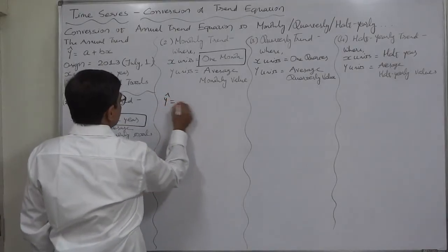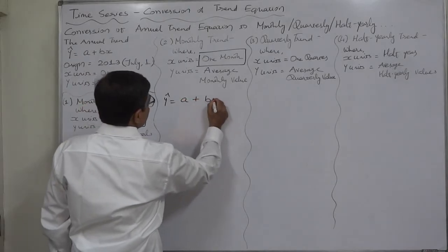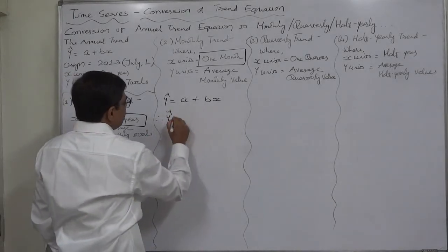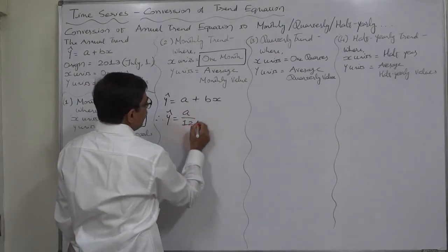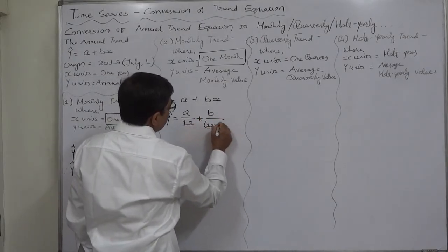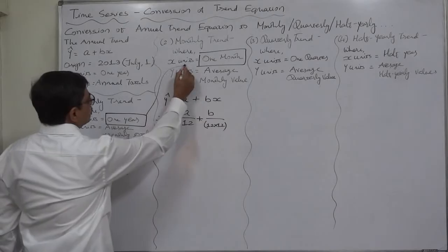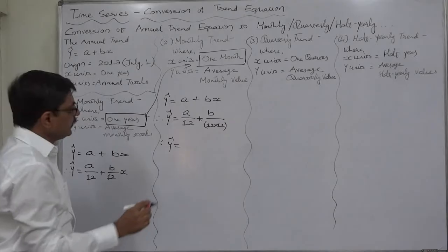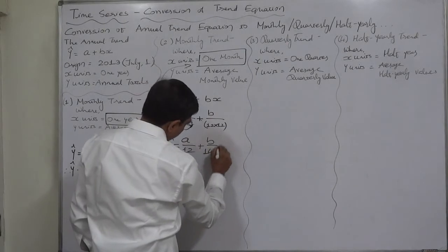Let's discuss what is going to happen. Annual trend is y equals to a plus bx. Now monthly where x unit is also one month will be a divided by 12 plus b divided by 12 into 12. See the difference between these two. Hence ultimately the monthly trend would be a by 12 plus b by 144 times x.